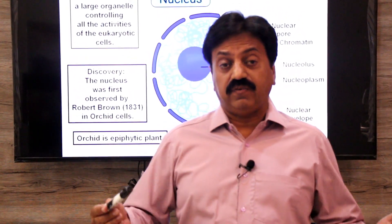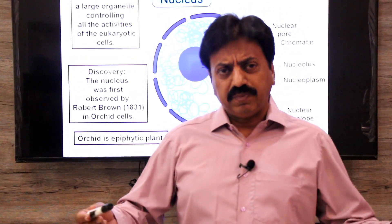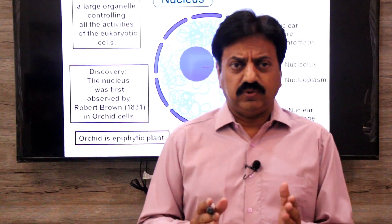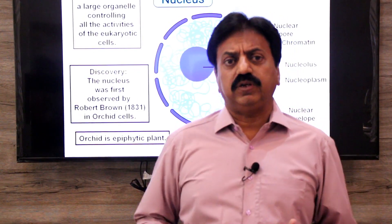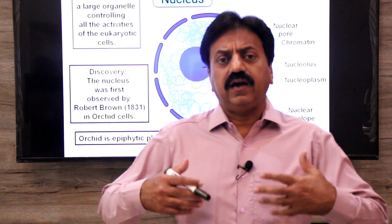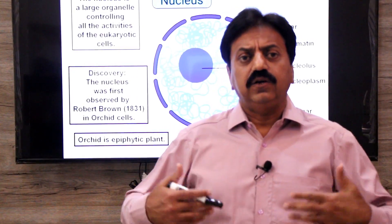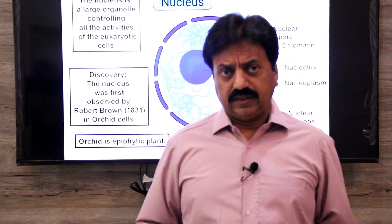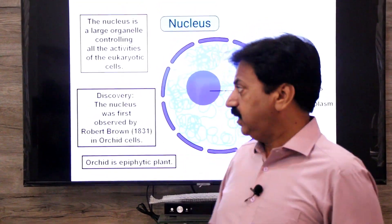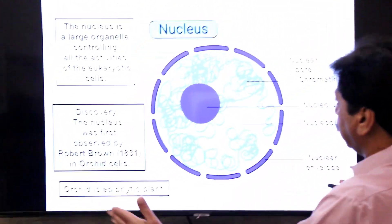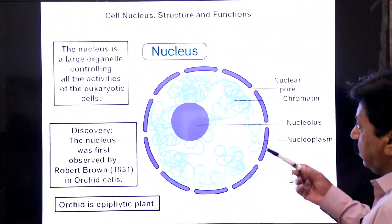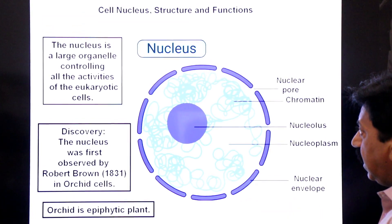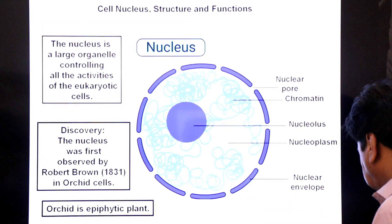An epiphytic plant is a plant that grows over another plant — it has a weak stem and needs support. Let's focus on the whole slide. We have to study the definition of nucleus, the discovery of nucleus, and the parts of the nucleus.